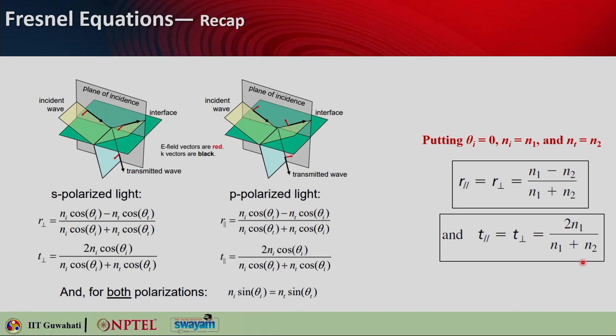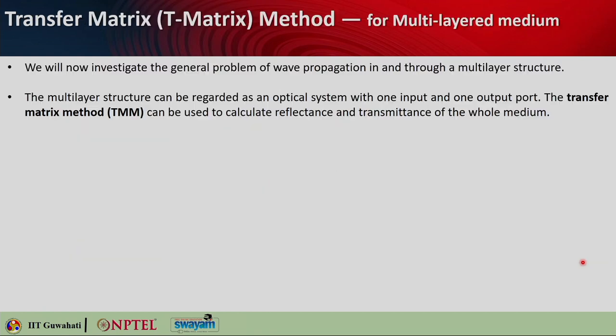With this understanding, we now need to approach real-life problems where there are multiple layered media. In that case, how to use Fresnel's equations is answered by the transfer matrix method. Fresnel equations tell you the reflection and transmission from one particular interface. For a general problem of wave propagation through a multilayered structure, the multilayered structure can be regarded as an optical system with one input port and one output port, and the transfer matrix method allows you to calculate the overall reflection and transmission.